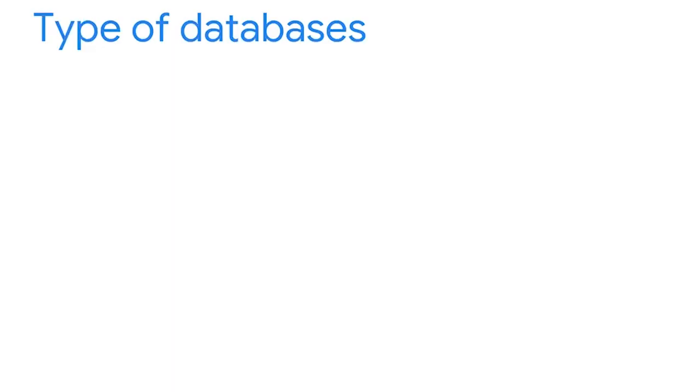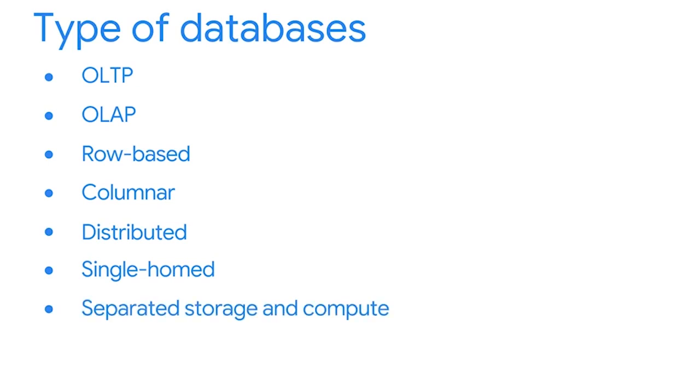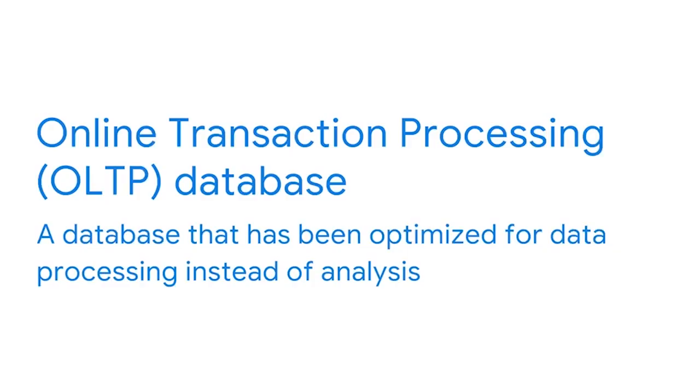These are huge projects for BI teams. So in this video, we'll discuss several types of databases, including OLTP, OLAP, row-based, columnar, distributed, single-homed, separated storage and compute, and combined databases. The first two, OLTP and OLAP systems, are based on how data is processed. An online transaction processing, or OLTP database, has been optimized for data processing instead of analysis. OLTP databases manage database modification and are operated with traditional database management system software. These systems are designed to effectively store transactions and help ensure consistency.